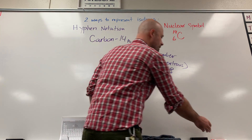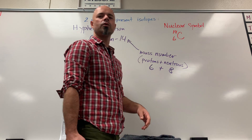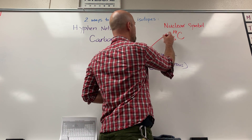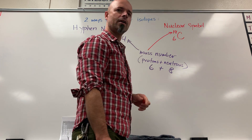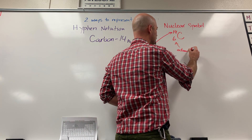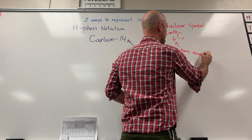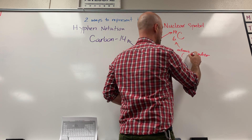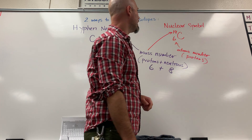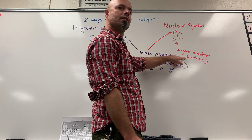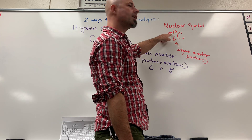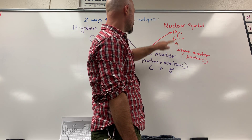The nuclear symbol makes it even easier — you don't need to use the periodic table. It gives you the mass number on top, the 14 right there, and it gives you the atomic number, which is the number of protons. So you know right away that you have six protons, and to figure out the number of neutrons, all you do is subtract 14 minus six, which gives you eight.